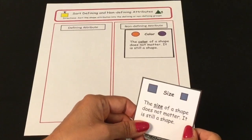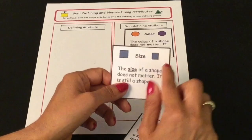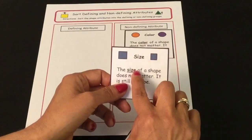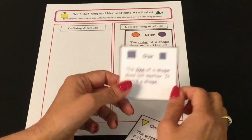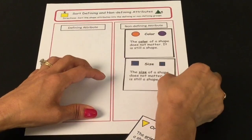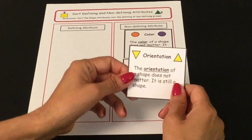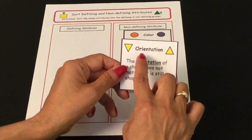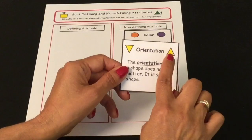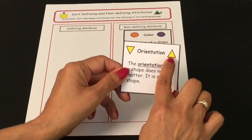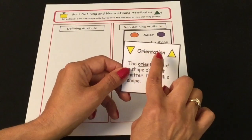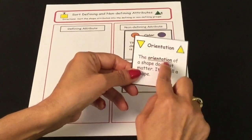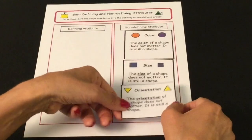The next non-defining attribute is size. If you've seen a small square and a big square, it's still a square. It doesn't matter what size the shape is; it is still a shape. So size is another non-defining attribute. The third non-defining attribute is orientation, which kind of means the direction that it's turned. A lot of people get confused here — they think a triangle is only a triangle if it's turned one way, but if I turn the triangle upside down or any other direction, it's still a triangle. It doesn't matter which way I turn it; it's still that shape. So orientation does not matter.